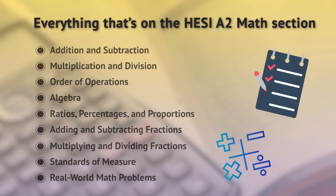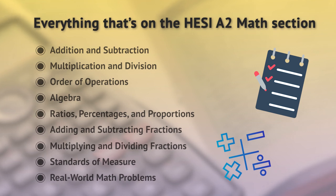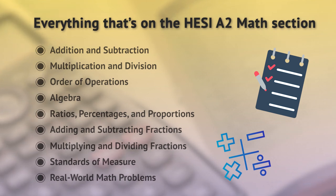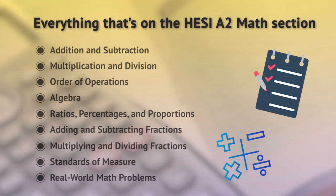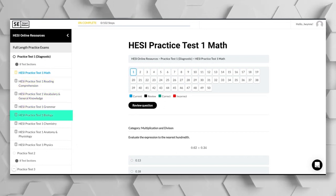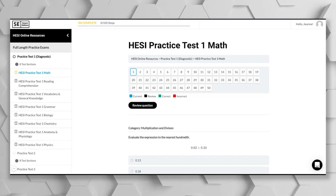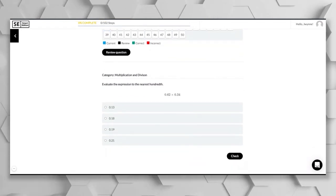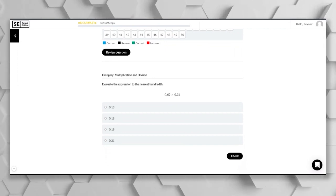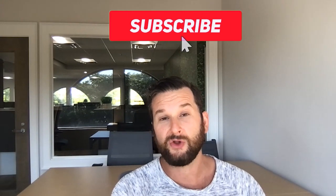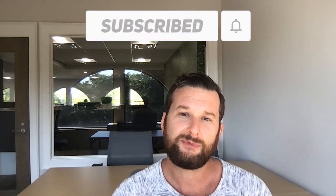That covers everything that's going to be on the math section. The three main topics — fractions, ratios and proportions, and word problems — are the big ones you need to spend the most time on. After you've mastered those, move on to the other areas. Use the free practice test below to identify specifically which areas you need help in. The online course, practice test packs, and study guidebook can help as well. Subscribe because we've got videos for all other subject areas to help you prepare for and pass the HESI A2 exam.